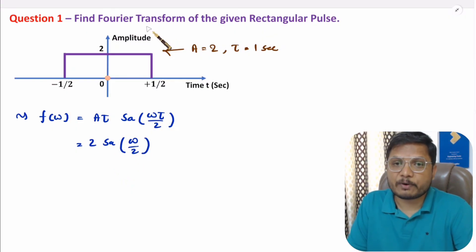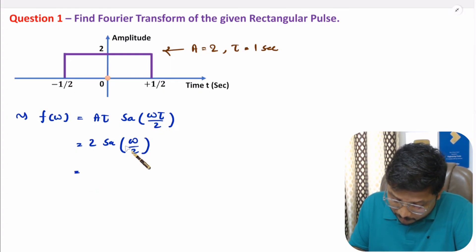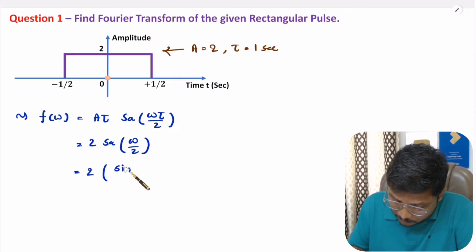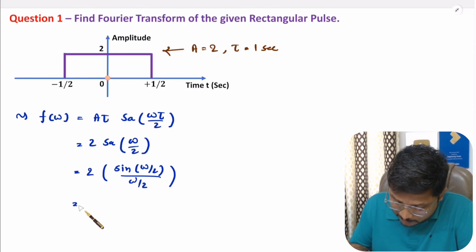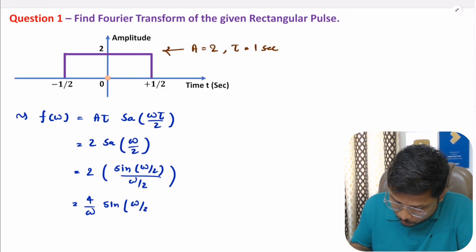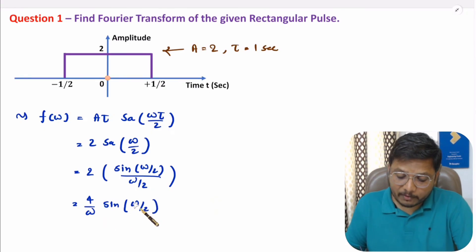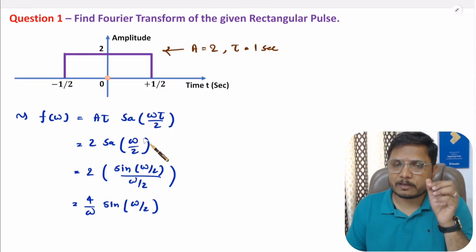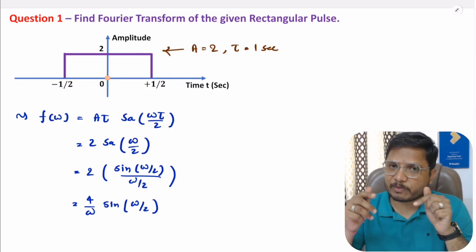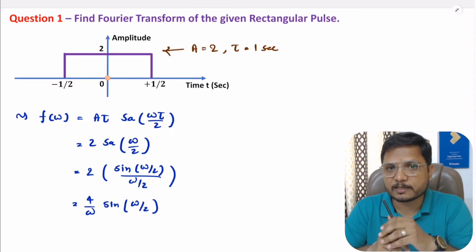Sometimes the answer can be in the form of sine, so one should know the sampling function. The sampling function of ω/2 is sine(ω/2) divided by ω/2. So the 2 goes into the numerator, giving 4/ω into sine(ω/2). That is how one can identify the Fourier transform of a given rectangular pulse. I hope you enjoyed this. If you have any confusion, place it in the comment section — I'll be happy to help. Thank you so much for watching this video.